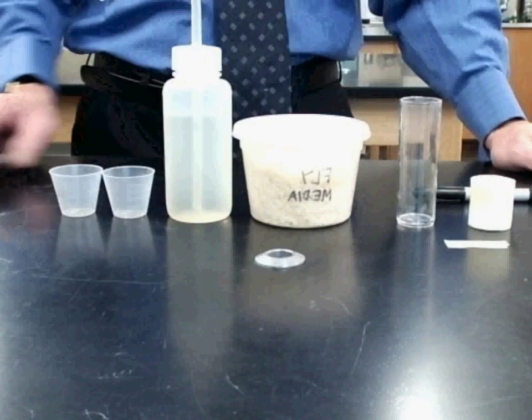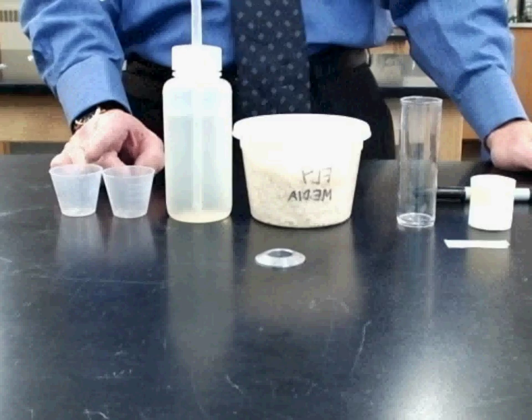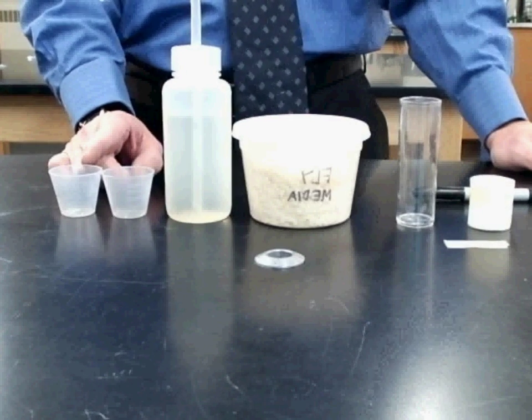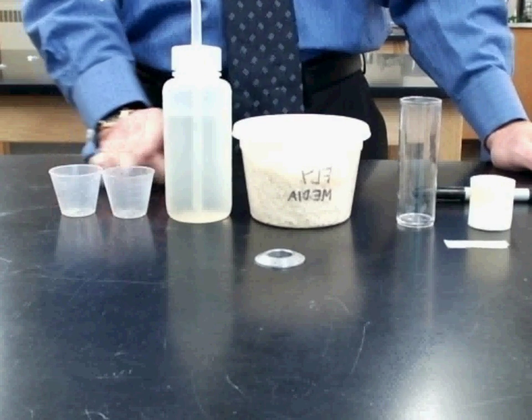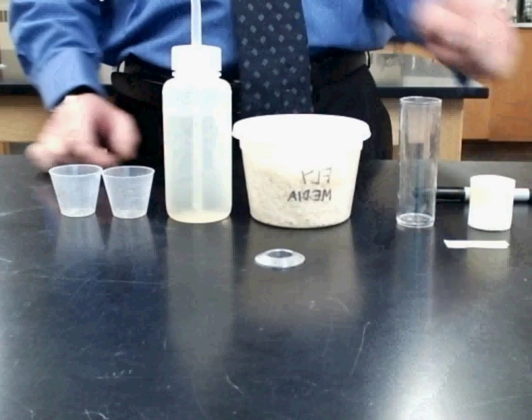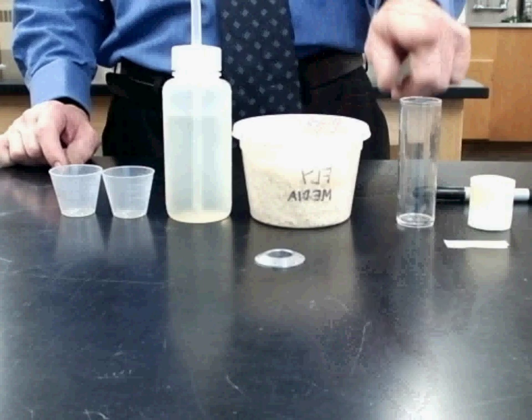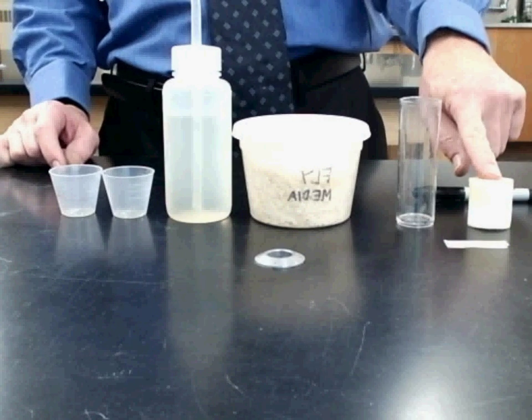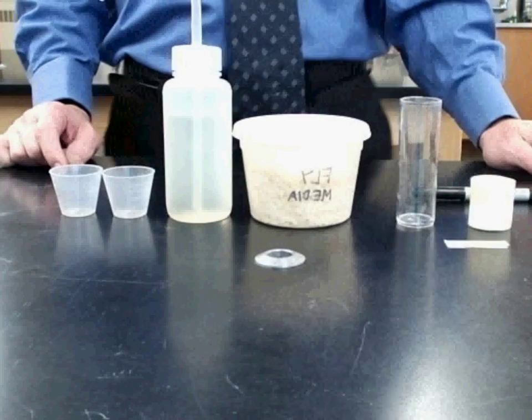What you need are two measuring cups, basically medicine cups. You need water - it could be sitting tap or regular tap. You need your fly media, your fly vial, your sponge top, and a label tape and marker.